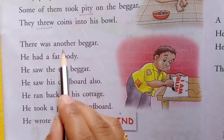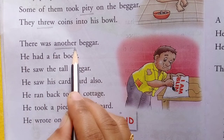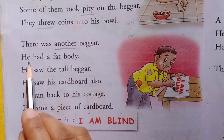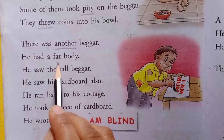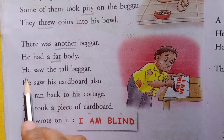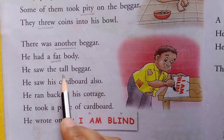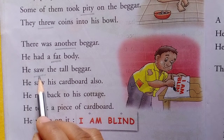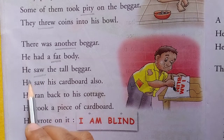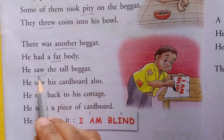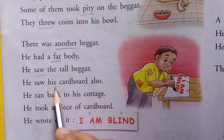There was another beggar. Wahan pe ek doosra bhi khada tha. He had a fat body — mota tha. He saw the tall beggar. Saw matlab dekha — see matlab hota hai dekhna; saw matlab usne dekha. He saw the tall beggar. Usne dekha tha, past tense mein hai. He saw his cardboard also.